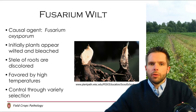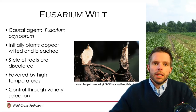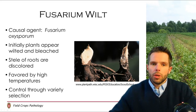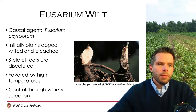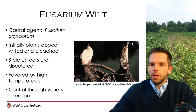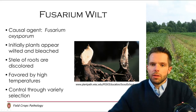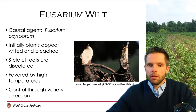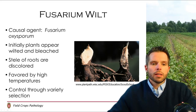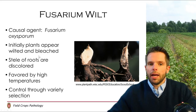Another vascular disease on alfalfa would be fusarium wilt, which is caused by Fusarium oxysporum. You can see the internal damage here, but what you might notice first is that the plants will appear wilted and maybe bleached. When you cut into the roots of affected plants you'll notice that the vascular system is going to be discolored, which is pretty diagnostic for fusarium wilt on alfalfa. This disease is favored by high temperatures, which is a bit different than some of the other diseases of alfalfa. Control here is again going to be through variety selection.